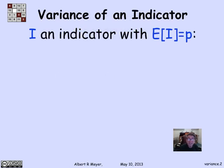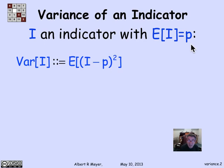A basic place to begin is to ask about indicator variables and their variance. An indicator variable I is 0,1-valued — also called a Bernoulli variable. If the probability that it equals 1 is p, that's also its expectation. So we have an indicator variable with expectation p, and we're asking: what's its variance, which by definition is the expectation of (I minus p) squared?